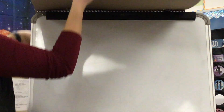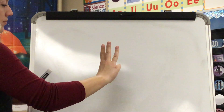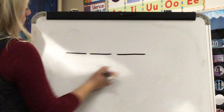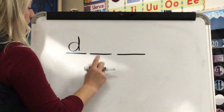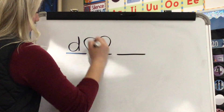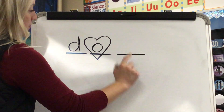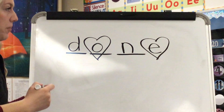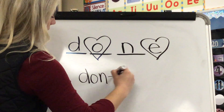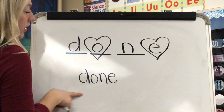We have two new heart words to talk about today. Our first heart word is the word done. What word? Done. Stretch done: D-a-n. The uh in done is spelled O — that's a tricky part you have to know by heart. There's also a silent E at the end of done. Spelled done: D-O-N-E. Word? Done. Yes, done.